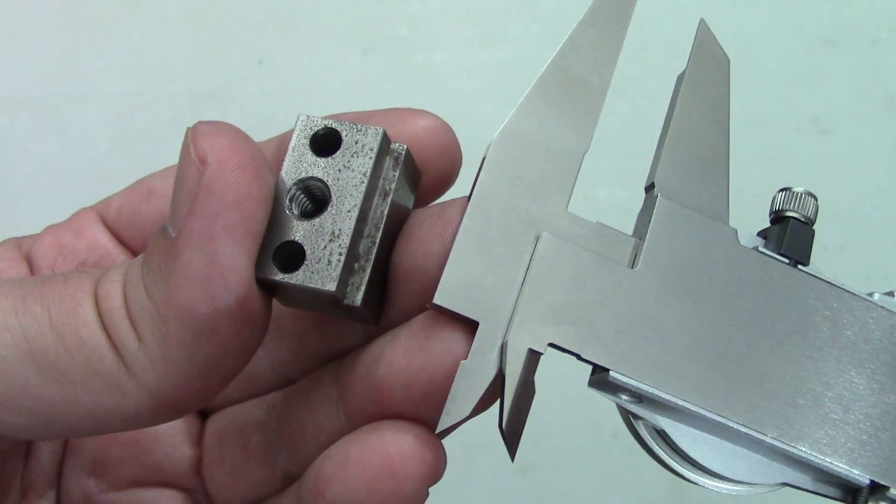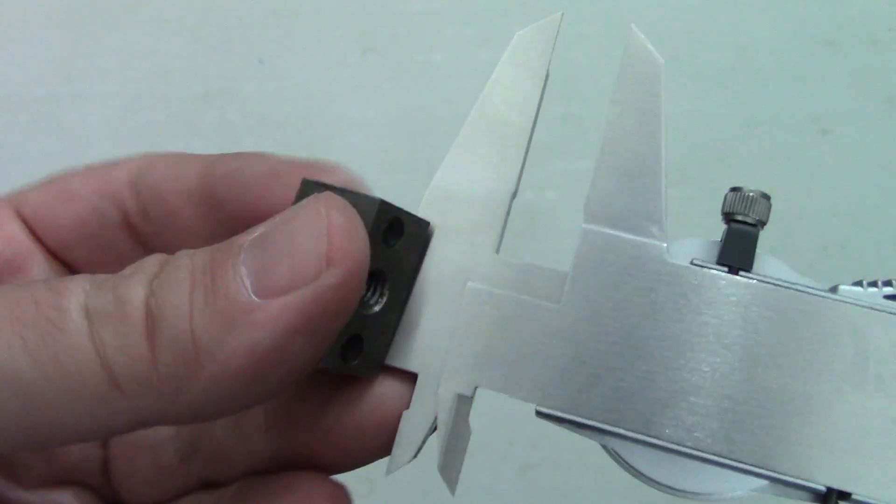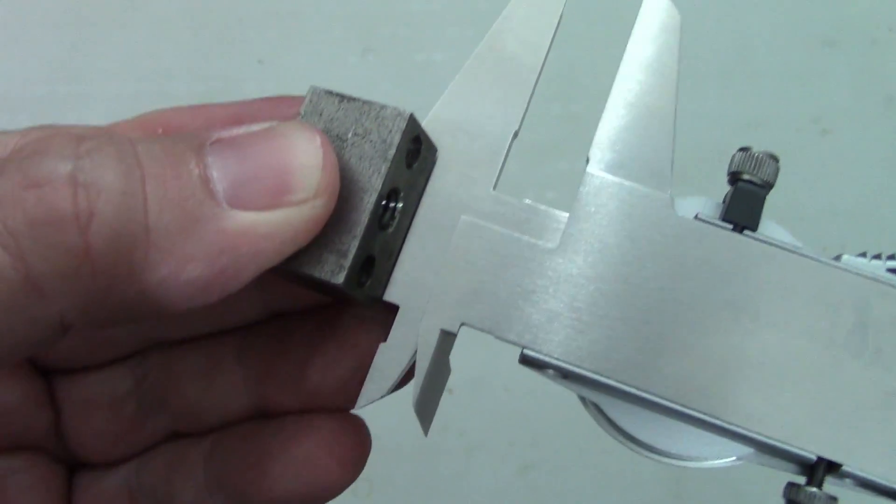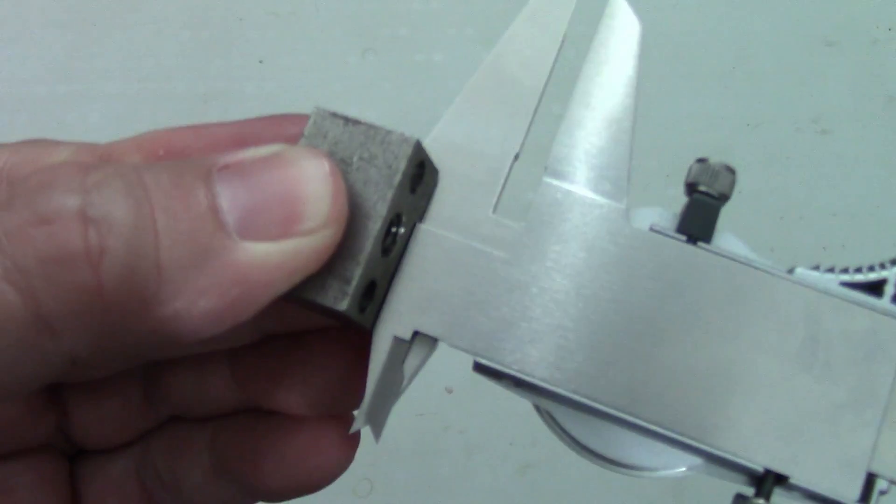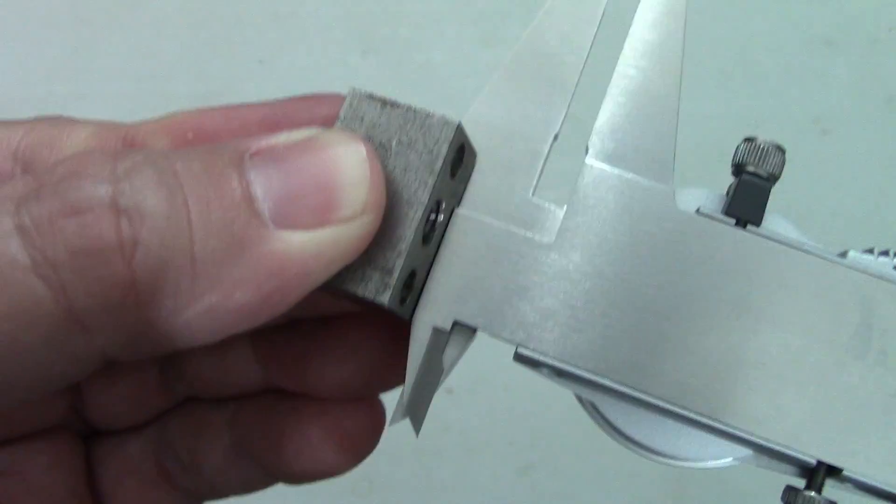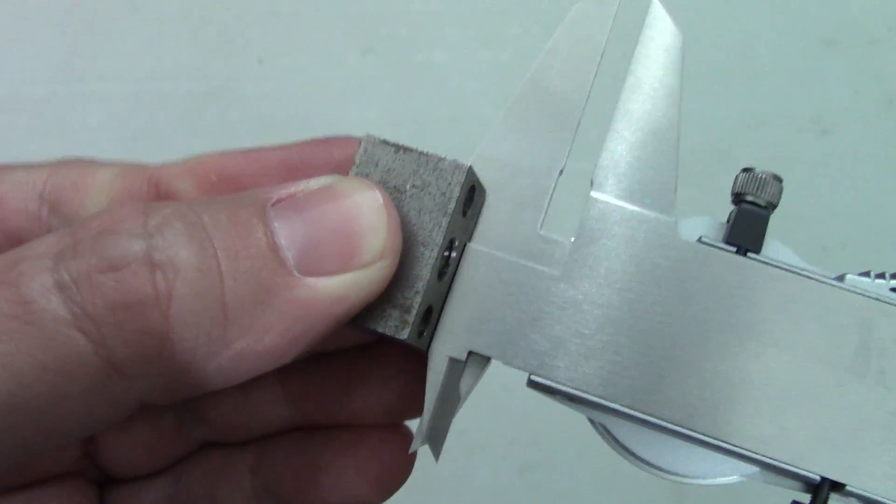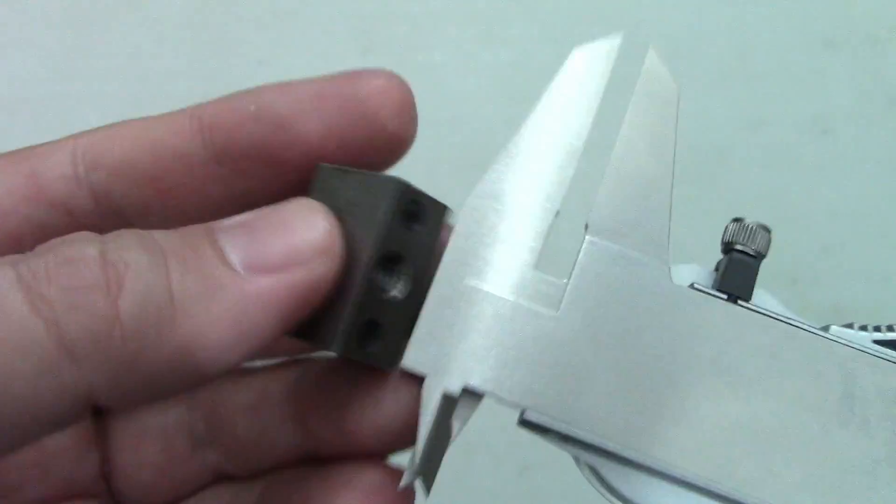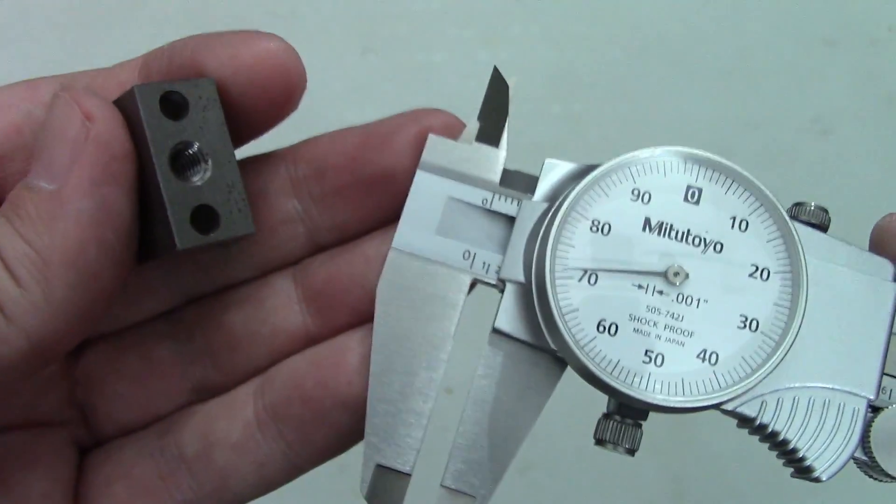The same thing goes for making a step measurement. Get the end of the calipers in position first, and then slide the moving jaw up to meet it. You can rock the calipers around to feel when the jaws are seated on the part, and it's a good idea to take multiple measurements to make sure you're getting consistent readings each time.